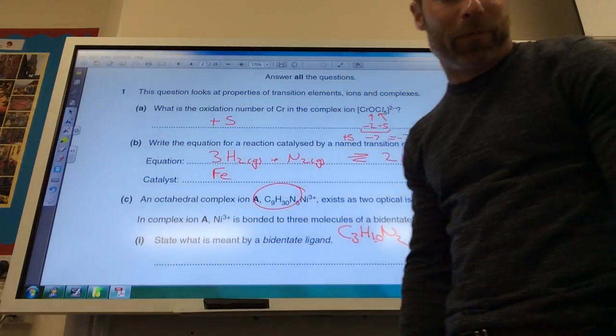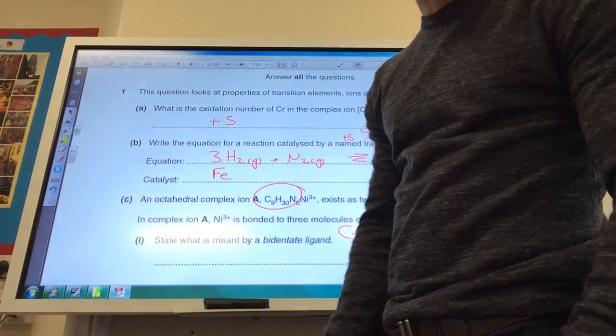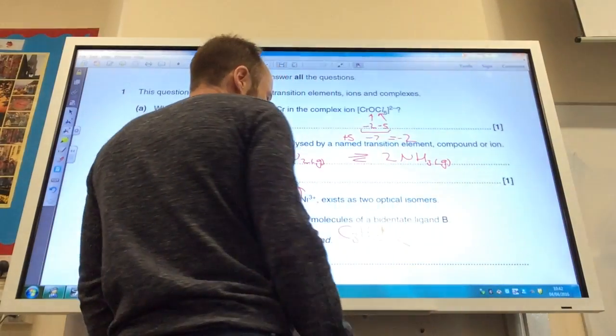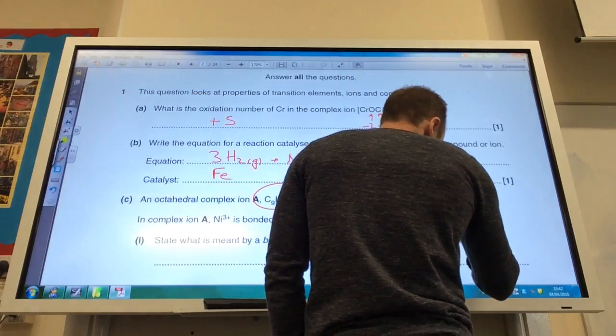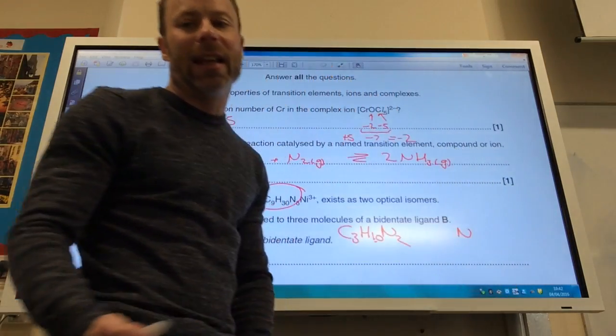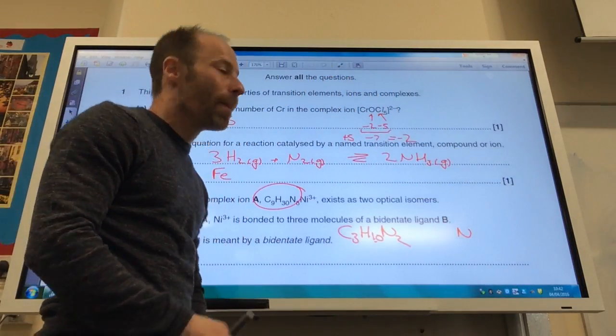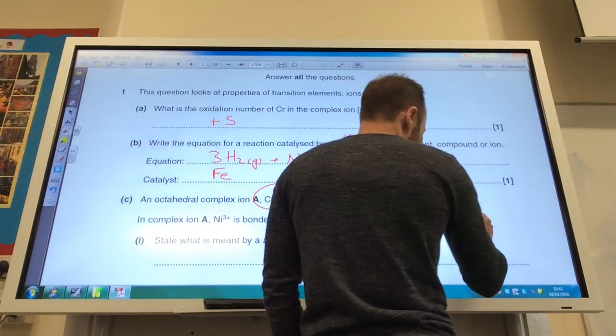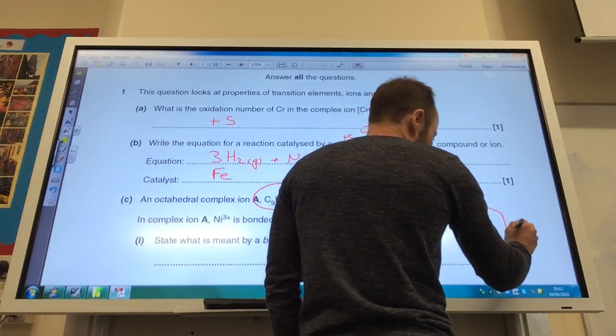Draw a possible structure for B, and explain how it is able to bond as a bidentate ligand. So you've got your two nitrogens. Hopefully you would have seen these in the work that you've done. You've got a carbon backbone of three, so I'm just going to do skeletal,